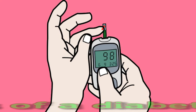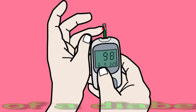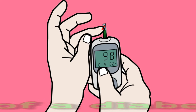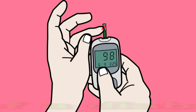If the person does not notice or act on the symptoms and glucose levels continue to decrease, they will become unconscious. Prolonged unconsciousness due to altered blood sugar levels is called a diabetic coma.